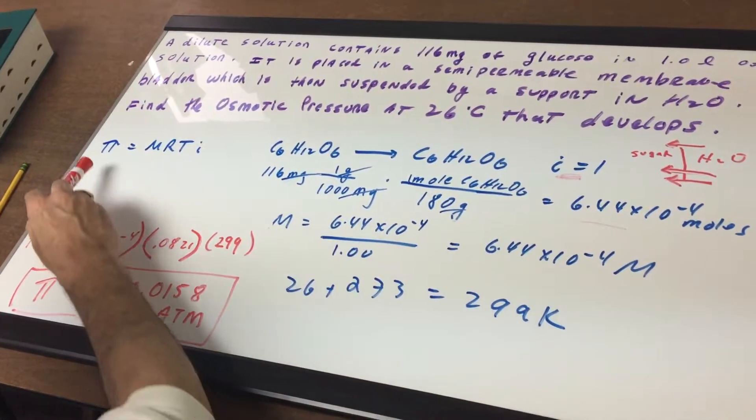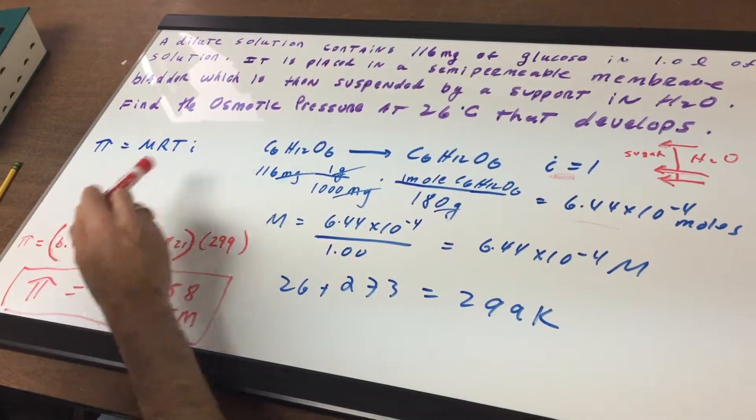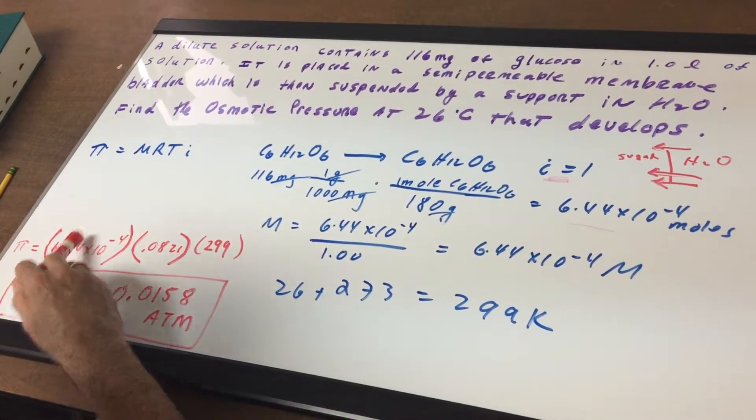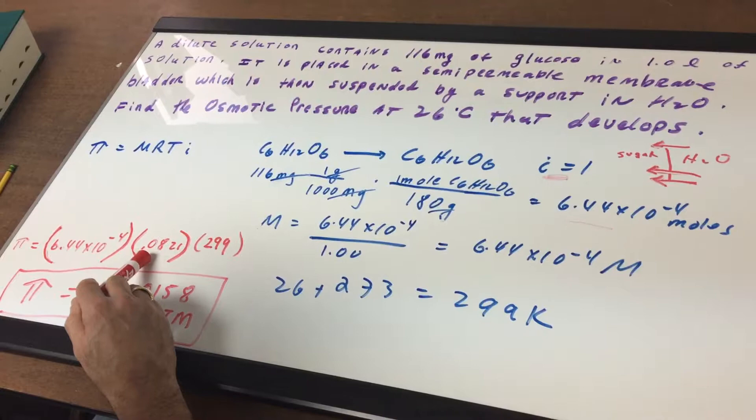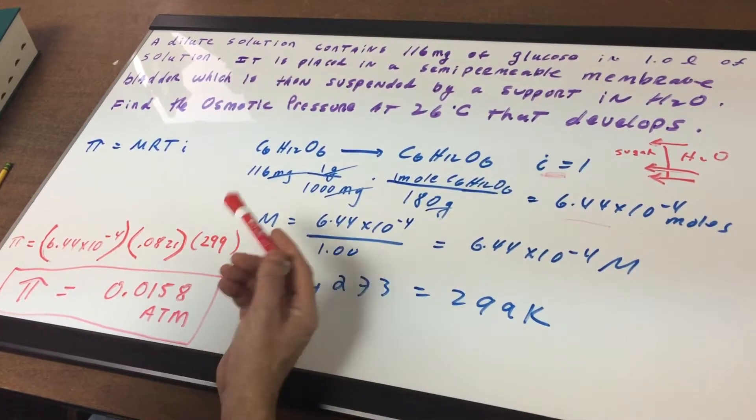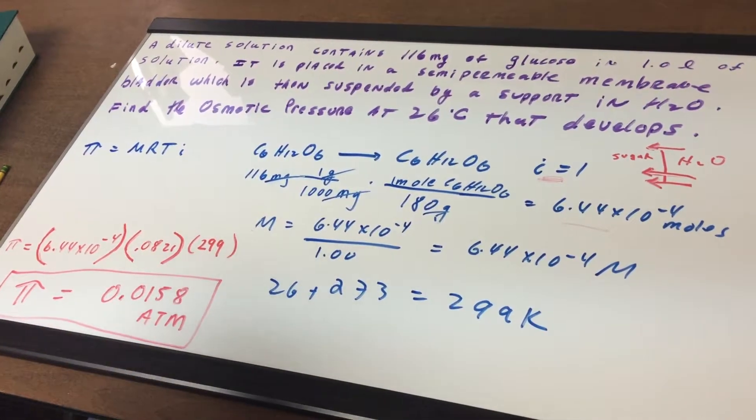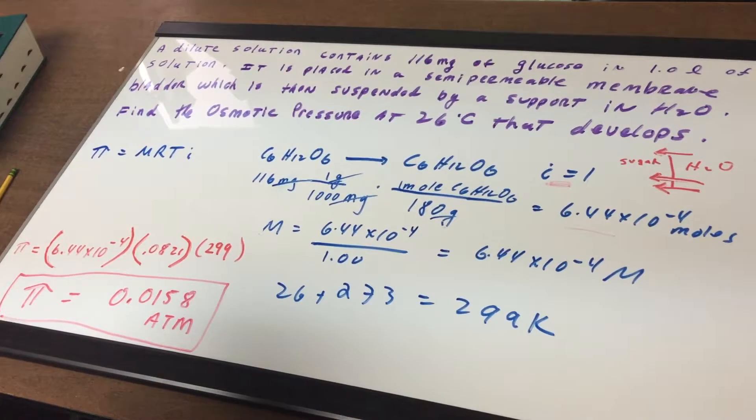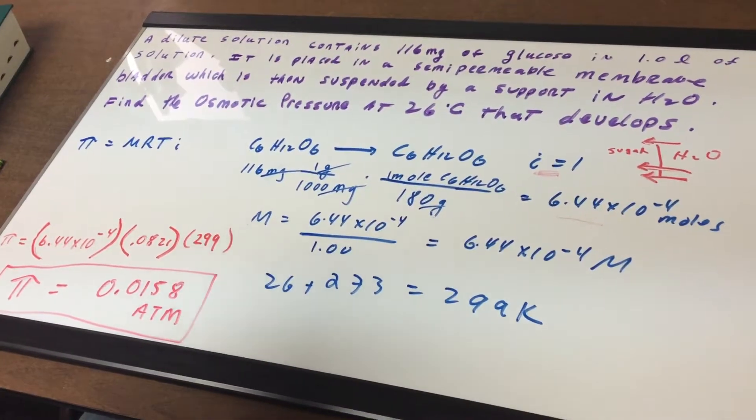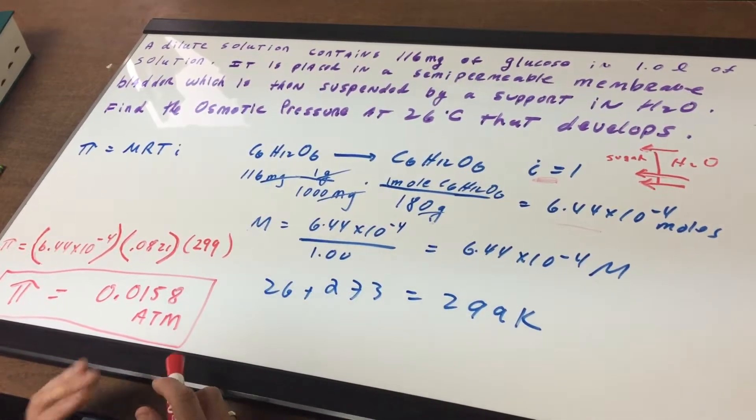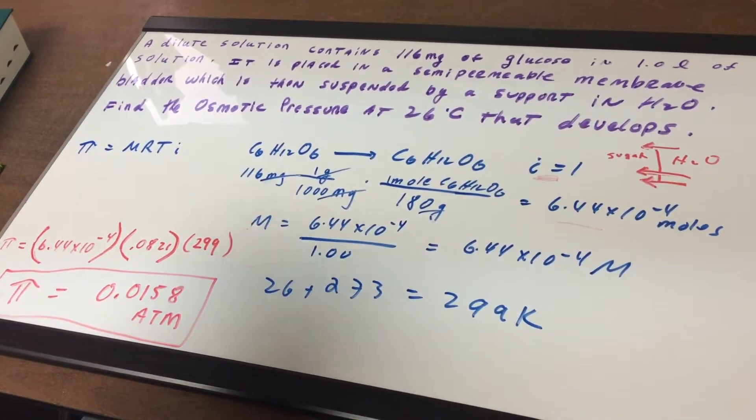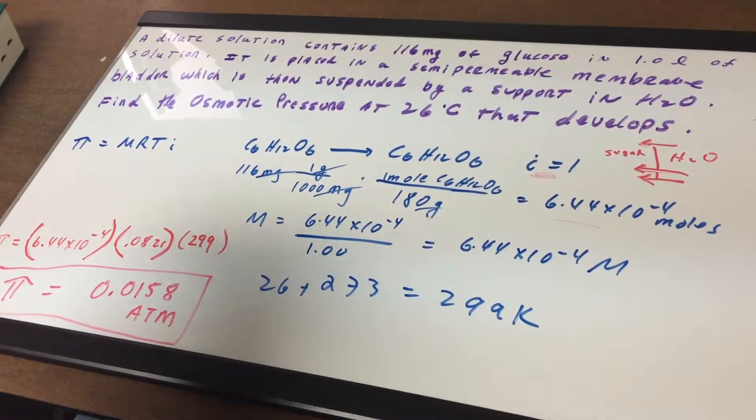So now we're going to plug the numbers back in. Pi, which is the osmotic pressure, is the molarity which we found. There's the R. There's the T. i is equal to 1. Multiplying together gives me a value of 0.0158 atmospheres. The answer is in atmospheres because that's the unit of the gas constant that we need.